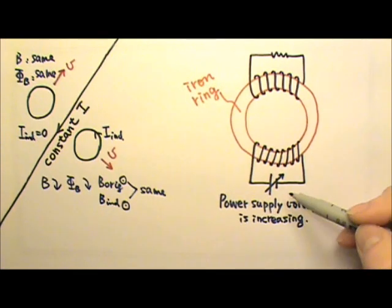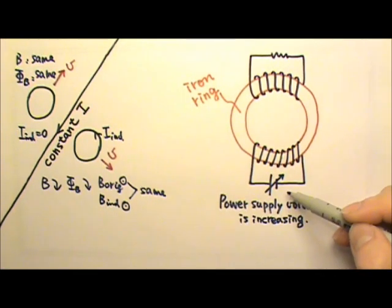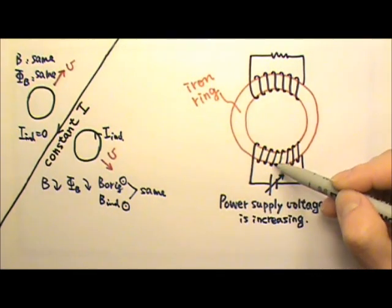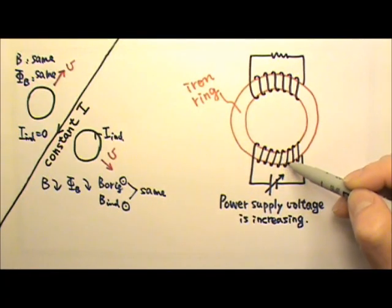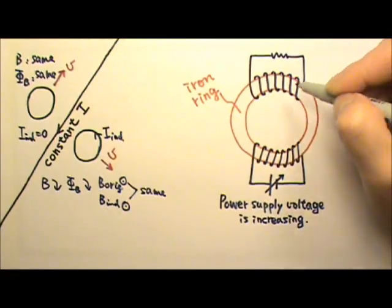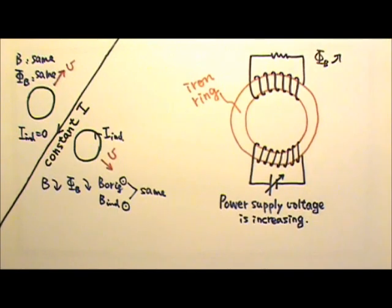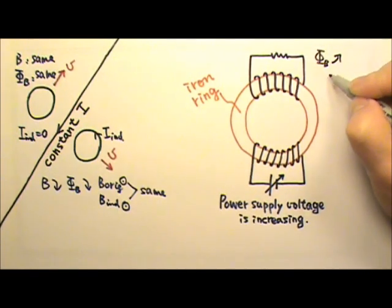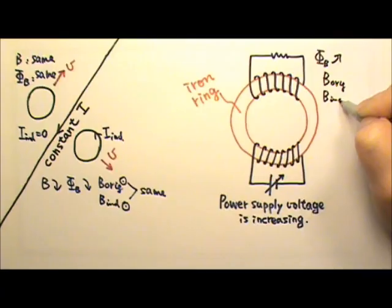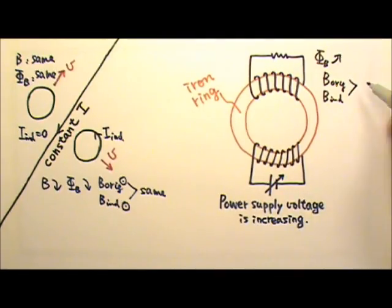As the power supply's voltage increases, the current in this coil will increase, and therefore it would produce a stronger magnetic field. That means the magnetic flux in that coil must increase. If the flux increases, the original magnetic field and the induced current magnetic field must be in opposite directions.